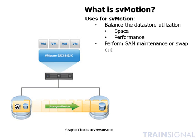Storage vMotion is also a great way to perform storage area network maintenance or a swap-out. If you have an older storage area network and you're moving to a brand new SAN on lease, you can use Storage vMotion to move virtual machines from the old SAN to the new SAN — the virtual machines never have to go down. You could also use Storage vMotion if you need to perform SAN maintenance, like swapping out a storage array processor or upgrading cache memory. You could move the virtual machines off onto another SAN, perform that maintenance, and then move those virtual machines back.